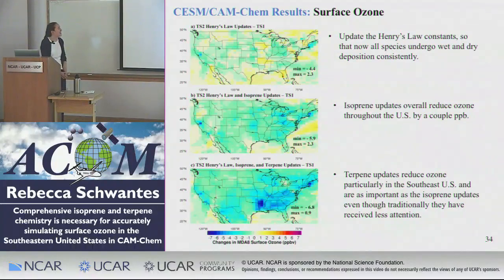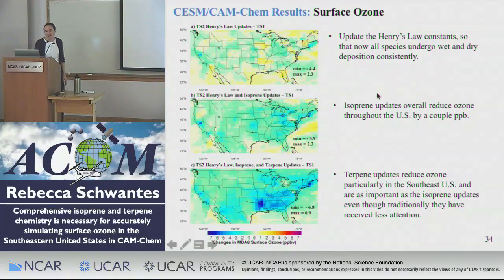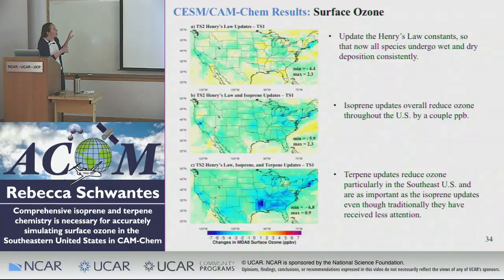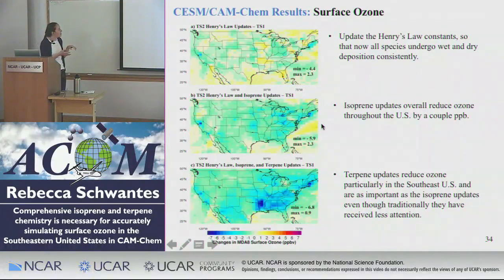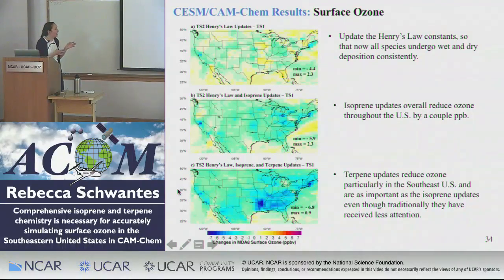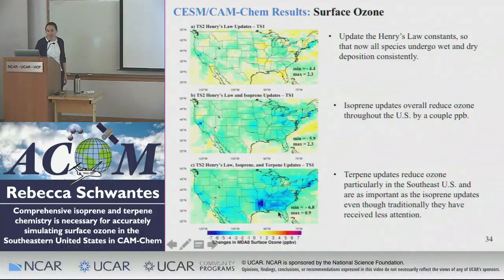Moving on to actual CAM-Chem results. These are changes in MDA8 surface ozone from the updated case minus the base case. The top panel shows just the Henry's Law constant updates — Mary Barth determined the Henry's Law constants for all TS1 species, and now all species undergo wet and dry deposition consistently with updated constants. This has a modest change on ozone. Adding Henry's Law plus isoprene updates gives a couple ppb reductions in ozone consistently, up to 6 ppb from the isoprene. But specifically for the terpenes — not typically added as completely as in this mechanism — you have larger reductions up to 7 ppb, and consistently across the eastern US around 4 to 5 ppb. So the terpenes really matter a lot.